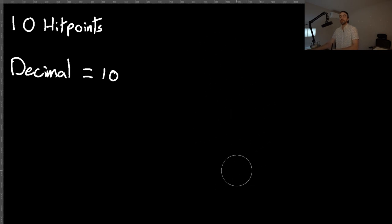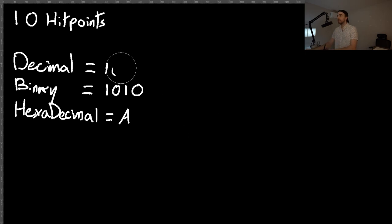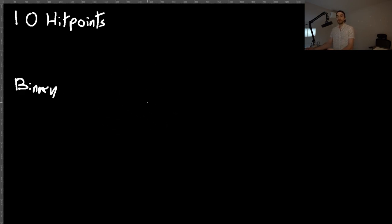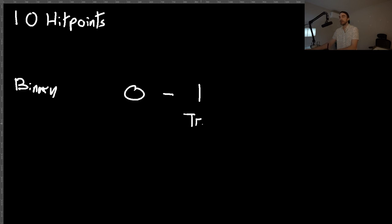Let's remember that concept of carrying the number over towards the left, because we'll need it for the binary format. Binary is expressed in computing in two different ways. Computers don't have a notion of two, three, four, five — they just have the notion of on and off. So we have zero, meaning off, and one, meaning on. This is usually represented as true and false if you cast that to boolean.